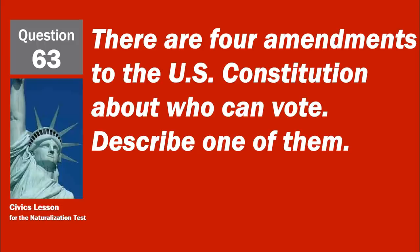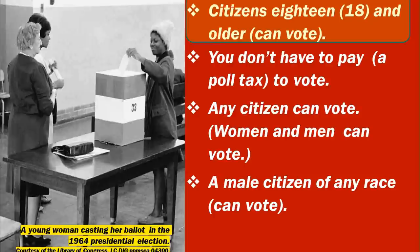There are four amendments to the U.S. Constitution about who can vote. Describe one of them. Citizens 18 and older can vote.